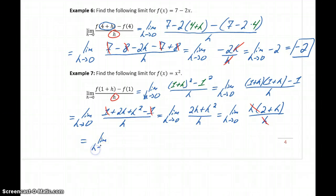And we get the limit as h approaches 0 of 2 plus h, which is a polynomial function, so we can evaluate that using direct substitution. So we get 2 plus 0, or 2 as the limit of that difference quotient.